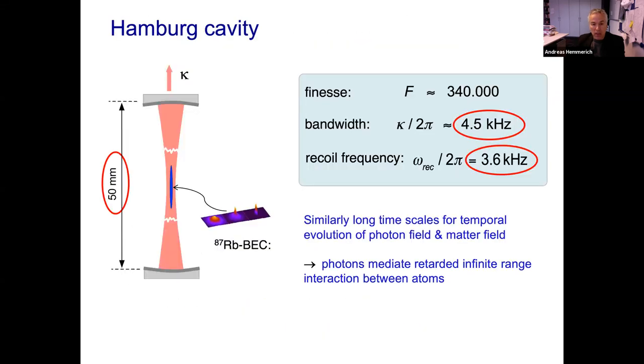And here I want to show you our cavity at Hamburg in a more experimental physics type aspect. I basically want to focus on these two numbers. The bandwidth is 4.5 kilohertz, which is pretty much the same as the recoil frequency. And this shows you that there are similarly long time scales for the temporal evolution of the light field, the photon field on one side, and the matter field, the atoms on the other side. And that once more points at the circumstance that I mentioned before, that the photons mediate a retarded infinite range interaction between the atoms.